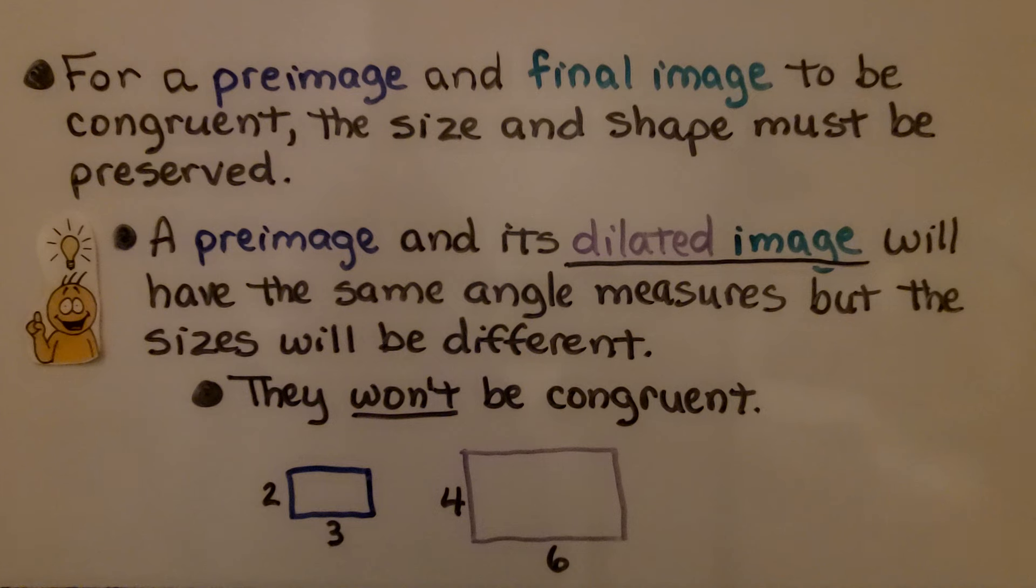For a pre-image and final image to be congruent, the size and shape must be preserved. A pre-image and its dilated image will have the same angle measures, but the sizes will be different. They won't be congruent.